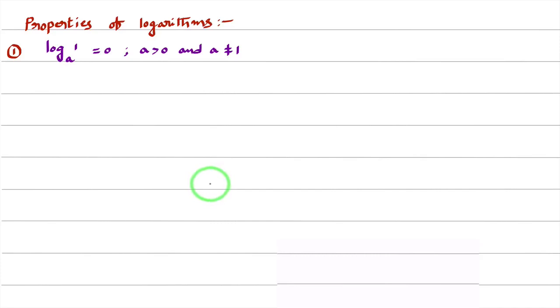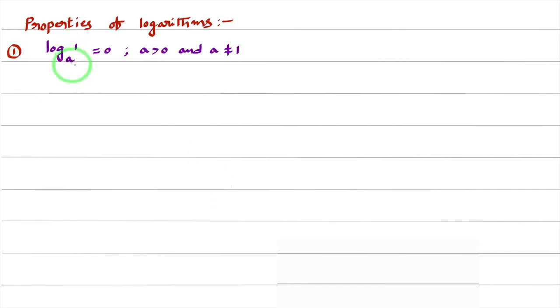There are 9 properties in total. This is the first property: log 1 base A is equal to 0. The value of log 1 base A is 0.